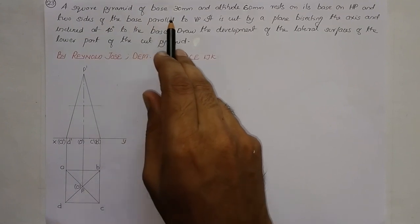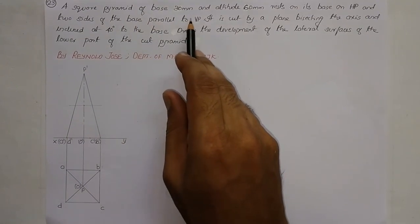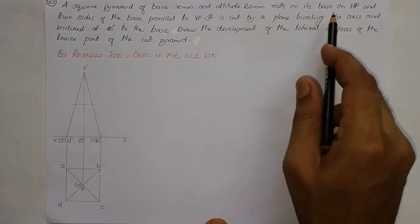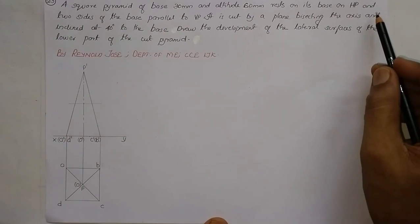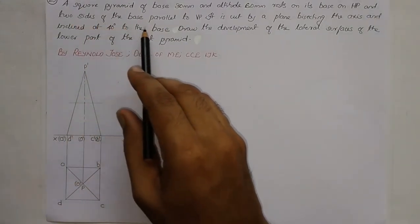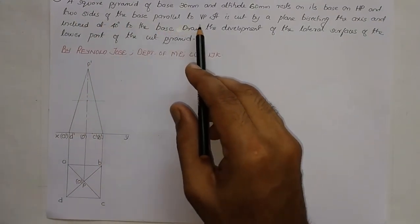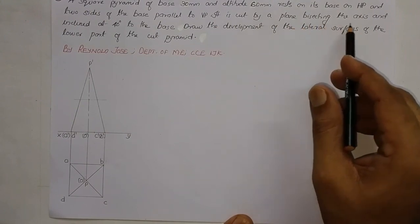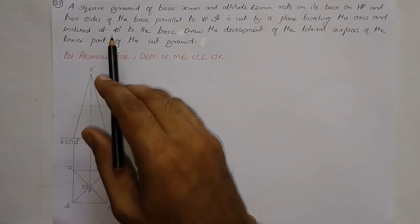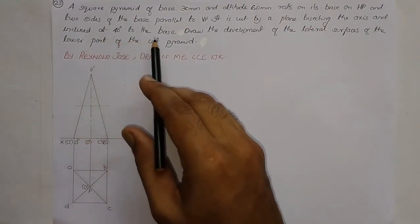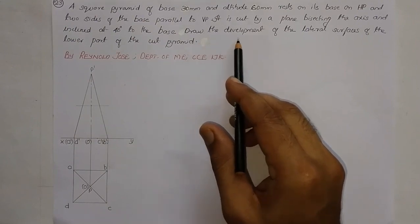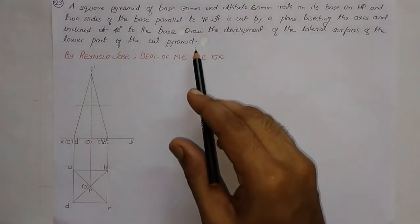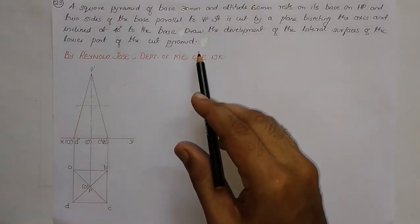A square pyramid of base 30 mm and altitude 60 mm rests on its base on HP and two sides of the base are parallel to VP. It is cut by a plane bisecting the axis and inclined at 40 degrees to the base. Draw the development of the lateral surfaces of the lower part of the cut pyramid.